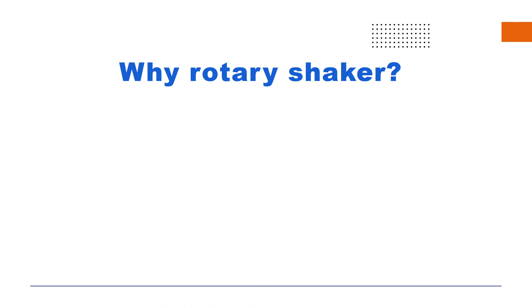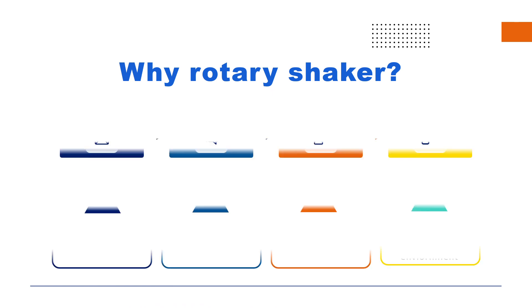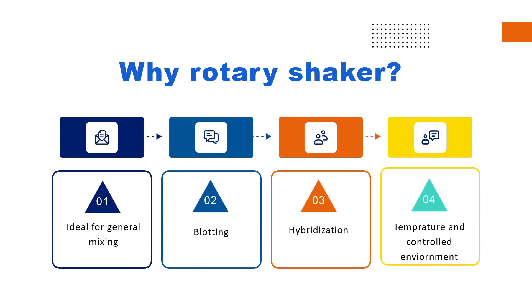Why Rotary Shakers are used: first, ideal for general mixing; second, blotting; third, hybridization; and use in temperature-controlled environments. Significance of the Rotary Shaker: Rotary Flask Shakers are ideal for the mixing and development of cultures, chemicals, solvents, and acids in microbiological cell cultures and life science laboratories. Thank you.